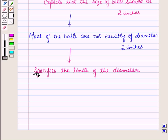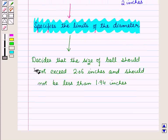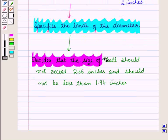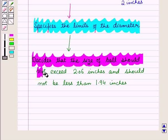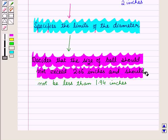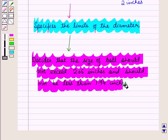So he decides a tolerance level. He specifies the limits of the diameter. Here he decides that the size of ball should not exceed 2.06 inches and should not be less than 1.94 inches.